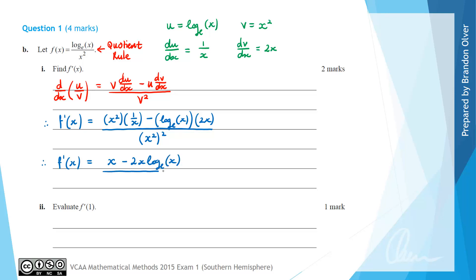And then all of that is divided by x, and x squared squared is x to the power of 4 on the bottom line. So that is the answer to part 1 of part B.